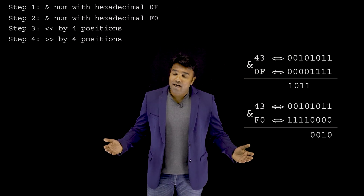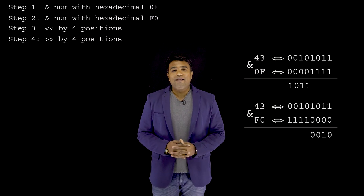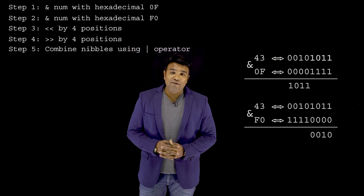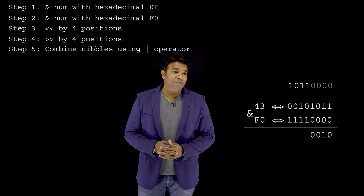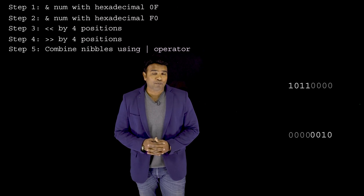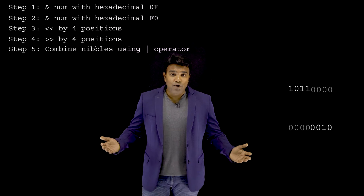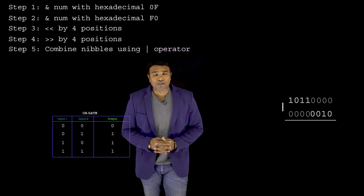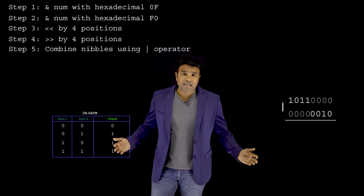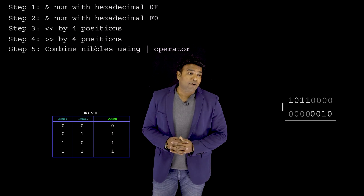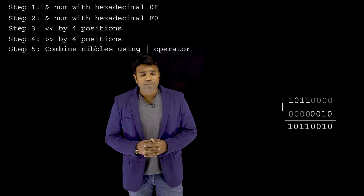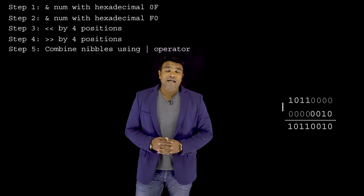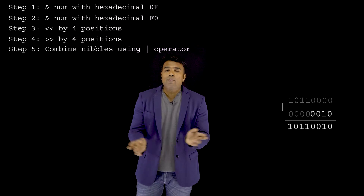The final step is about combining the nibbles to obtain a new byte using the OR operator. This is my first nibble, this is my second nibble. The OR operation behaves such that if and only if both inputs are zeros, the output is zero; in all other cases the output is one. Applying it, the result shows that we have been successful in swapping the nibbles.